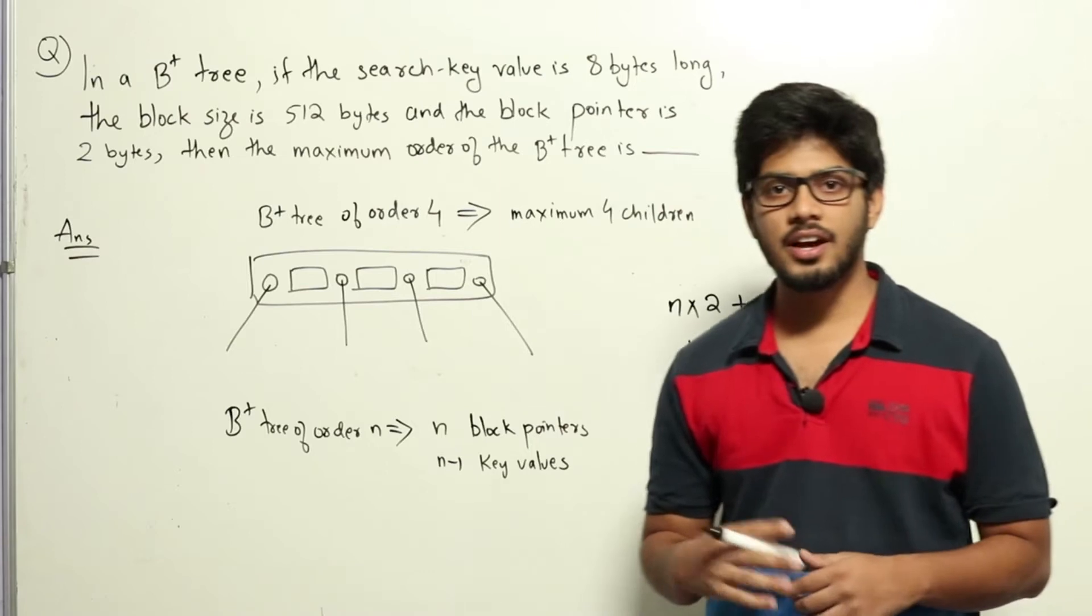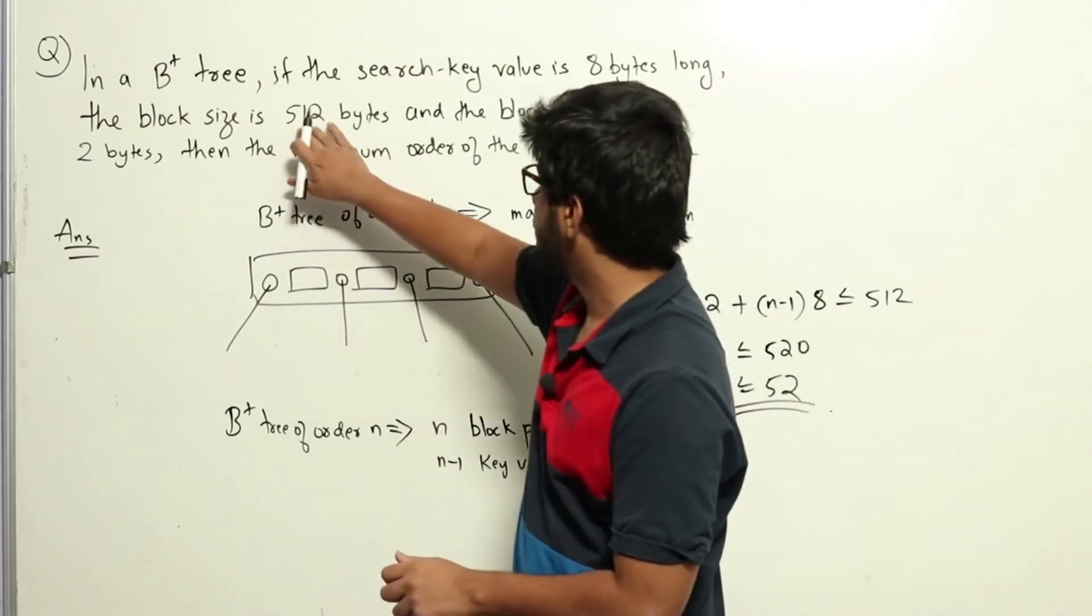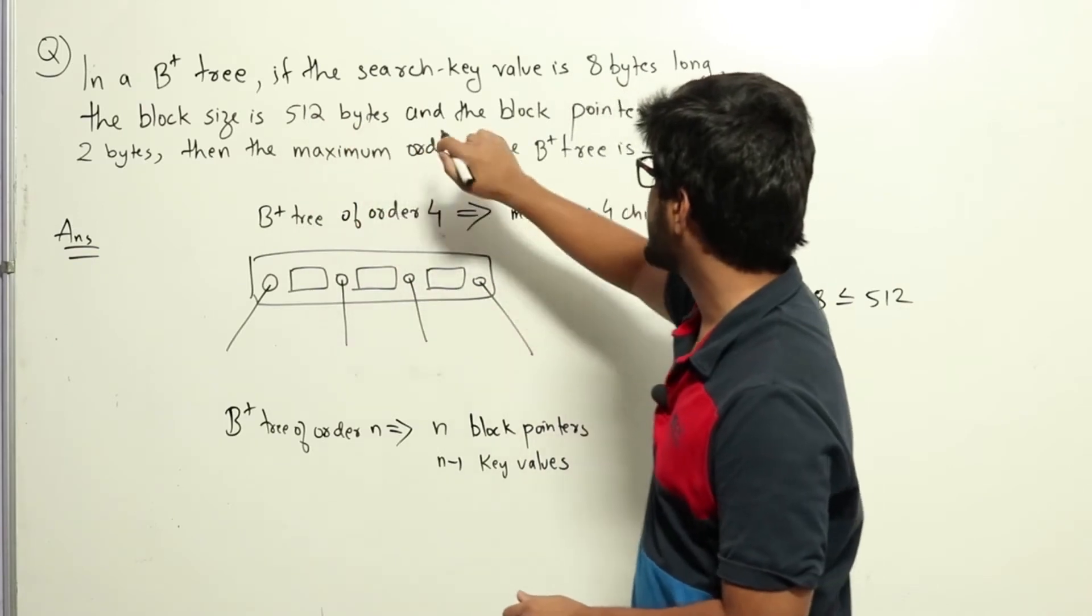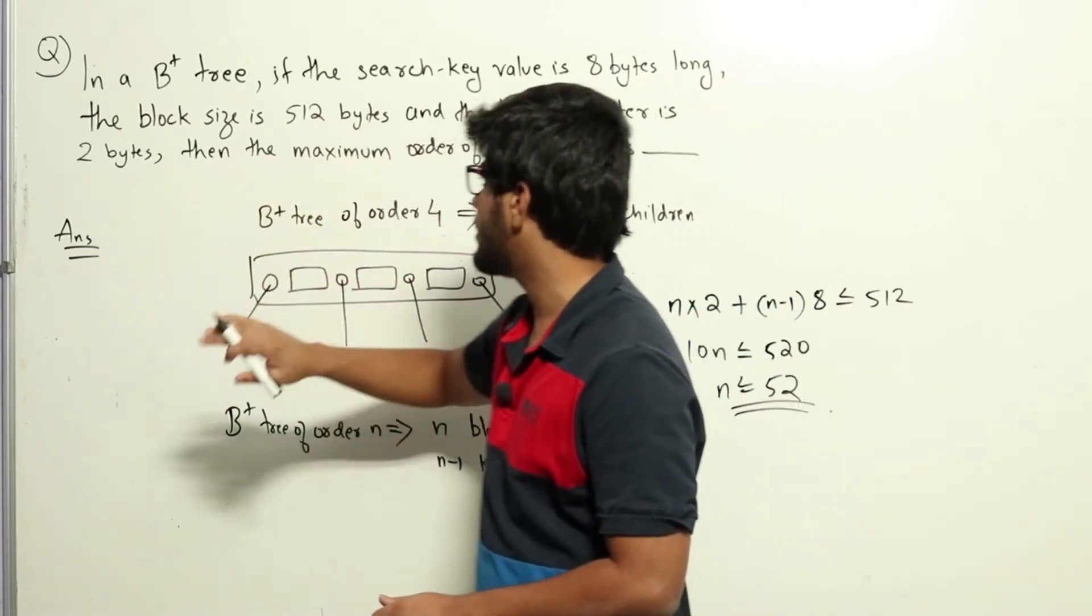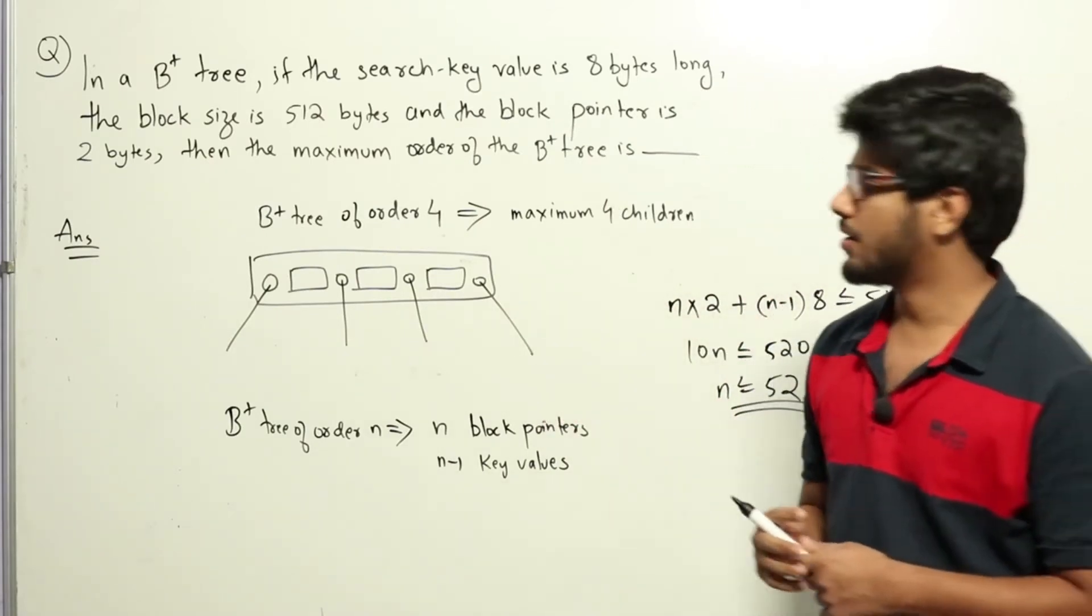This is a question from DBMS regarding B+ trees. We have been given that the search key value is 8 bytes and the block pointer is 2 bytes. We need to find the maximum order of the B+ tree.